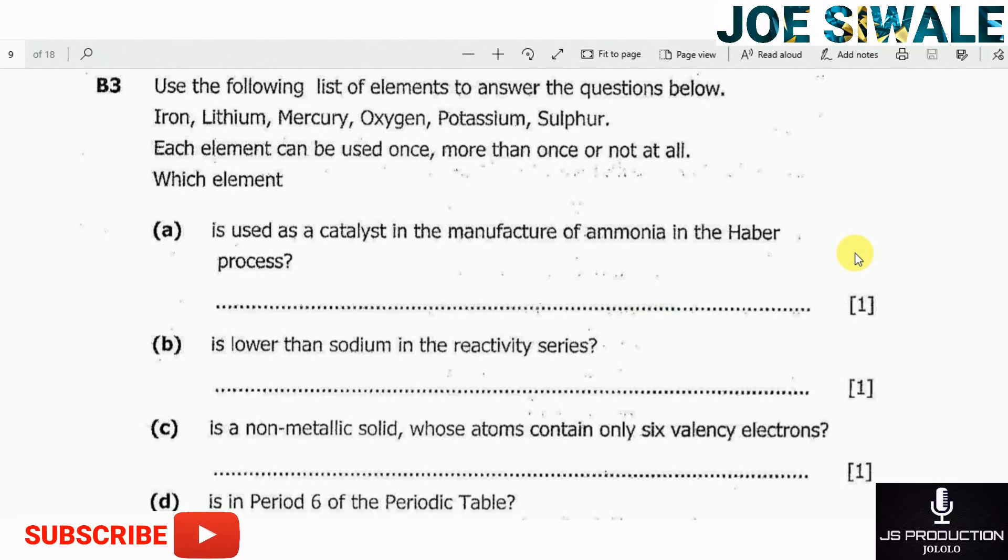The question reads: use the following list of elements to answer the questions below: iron, lithium, mercury, oxygen, potassium, sulfur. Each element can be used once, more than once, or not at all. Which element: